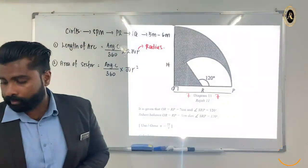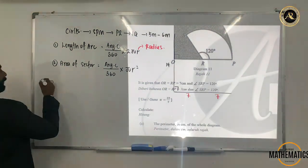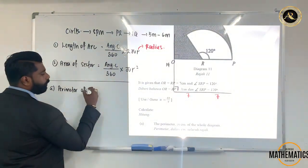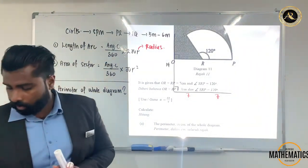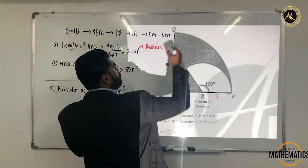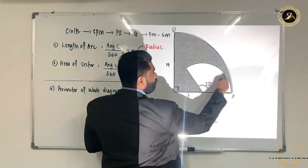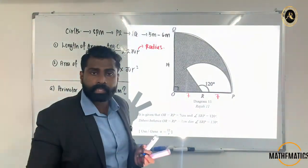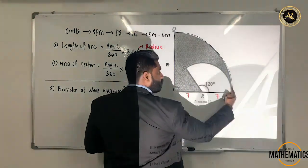Now let's look at Part A. Part A asks for the perimeter of the whole diagram — in Malay, 'perimeter seluruh rajah.' We must identify the outside boundary only. We cannot include the inside, because perimeter means only the outer edge. If the question asked for the perimeter of the shaded region, then we would include that inner boundary as well.